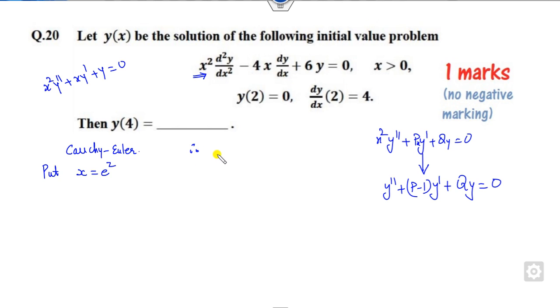Therefore, according to this, it will be y'' - 5y' + 6y = 0 (p is -4, so p-1 is -5). What is the auxiliary equation? If you write this auxiliary equation, the values of m are 3 and 2.